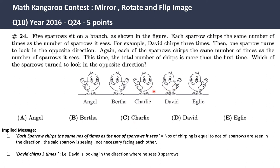If you look at David, it says that David chirps three times. So he has three sparrows when he is looking in the left direction. Even if Bertha, who is not looking in the David direction, she might not see David, but David will see her because he is looking towards her direction. They are not facing each other. So this is the implied message which you need to understand.